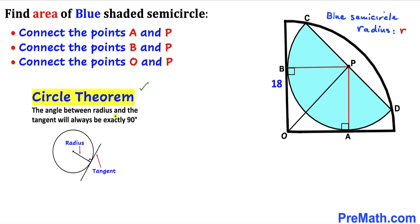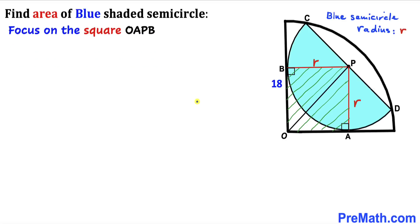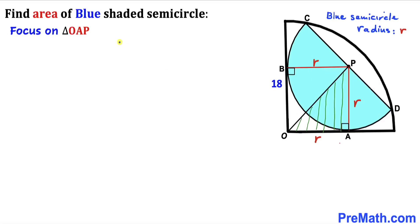According to the circle theorem, the angle between the radius and the tangent will always be 90 degrees. So in our case, this angle is 90 degrees and this angle is 90 degrees as well, since these are our radii and these are our tangent lines. Now let's focus on square OAPB — the two opposite sides are equal, so if one side length is r, the other is r as well.